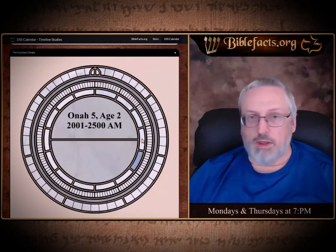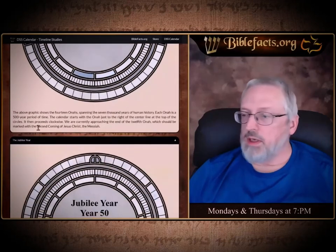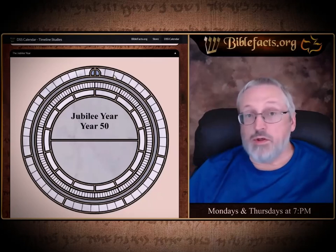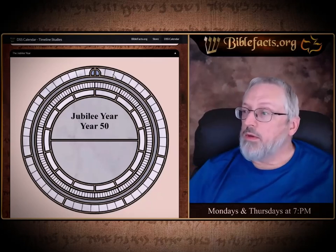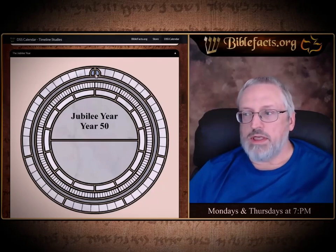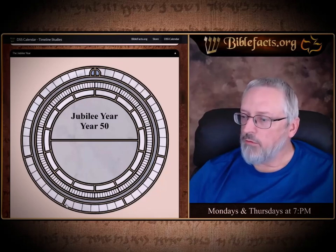These are the Onas — the innermost circle. Going further down, this is the Jubilee year. The outermost ring of the inner rings is the Jubilee counter. This is 50 years, and this highlighted position is the 50th year — a Jubilee year. You can see it's broken up into 1, 2, 3, 4, 5, 6, 7 — these are Shemitahs, or seven-year periods.